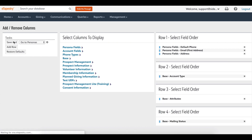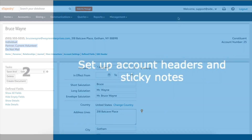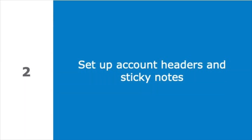A properly formatted account header will save you time because you won't need to access an account's personas or defined fields page to find key information. If you need to call or email a constituent, their phone number and email address are front and center in the account header. You may have accounts that have special conditions or qualifications that you want to be accessible to all users in your eTapestry database.